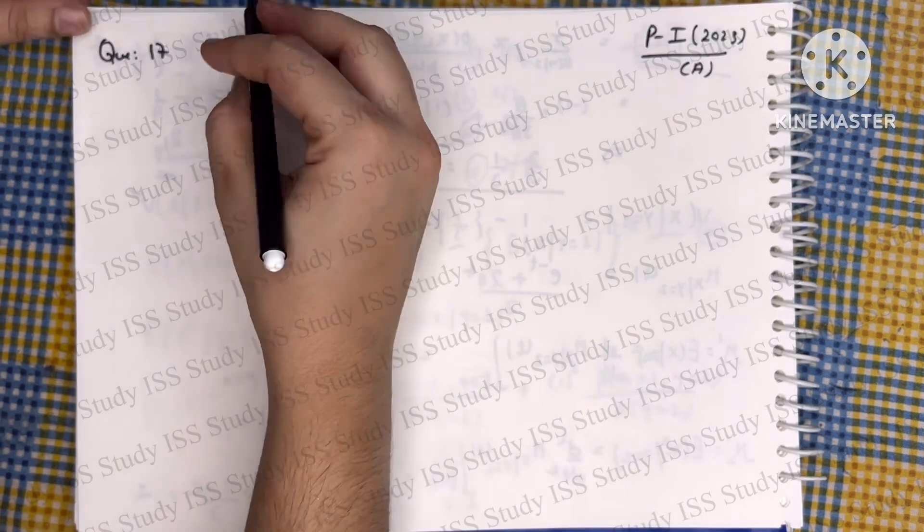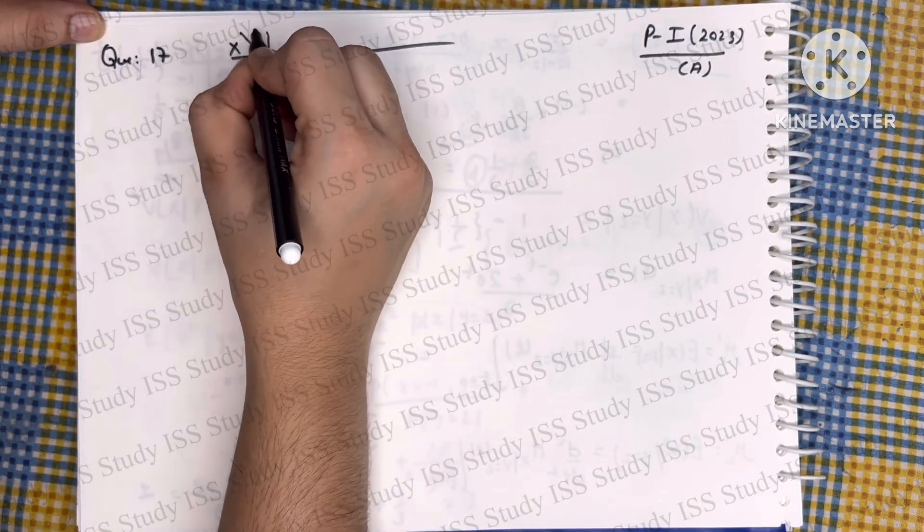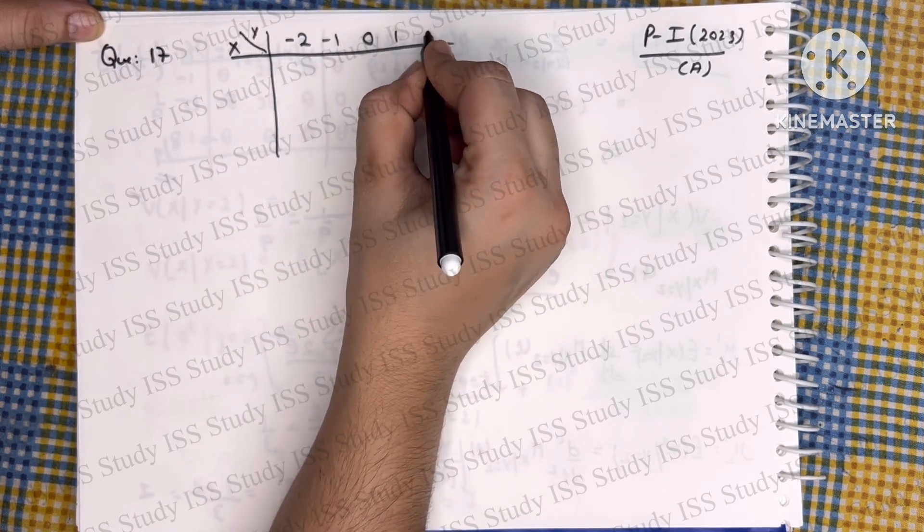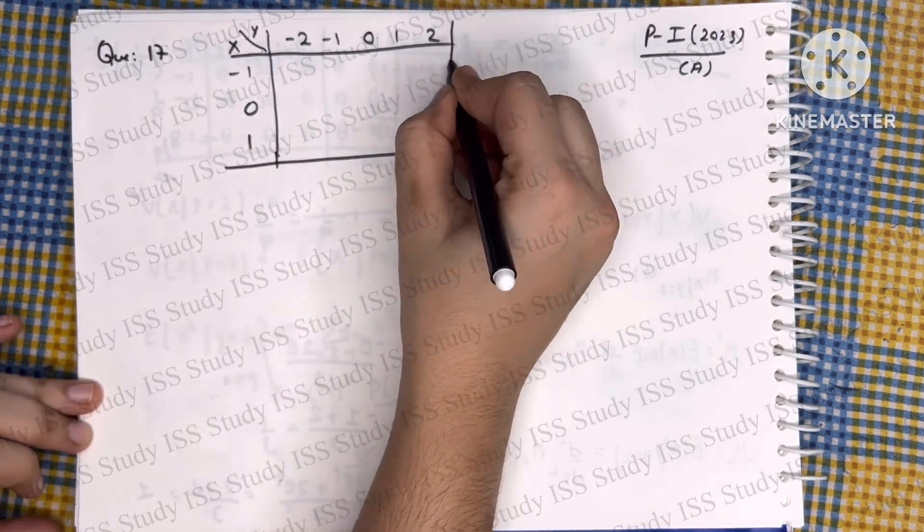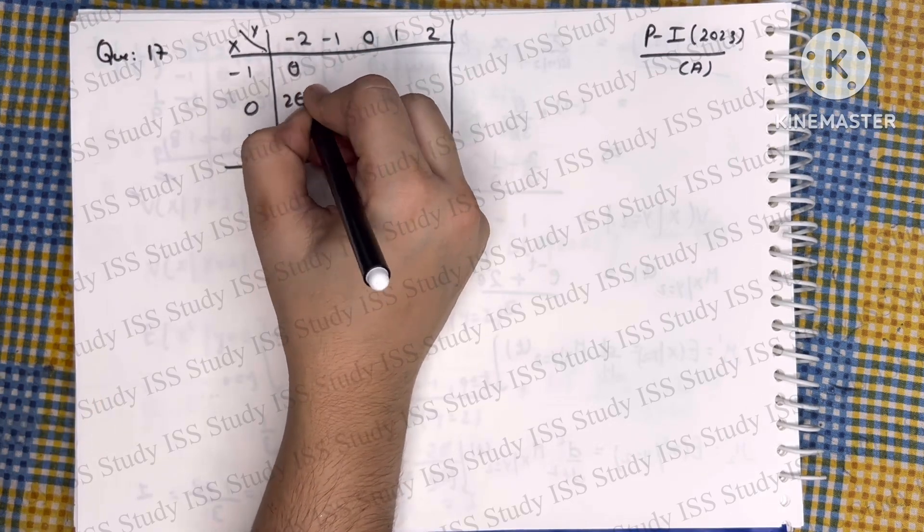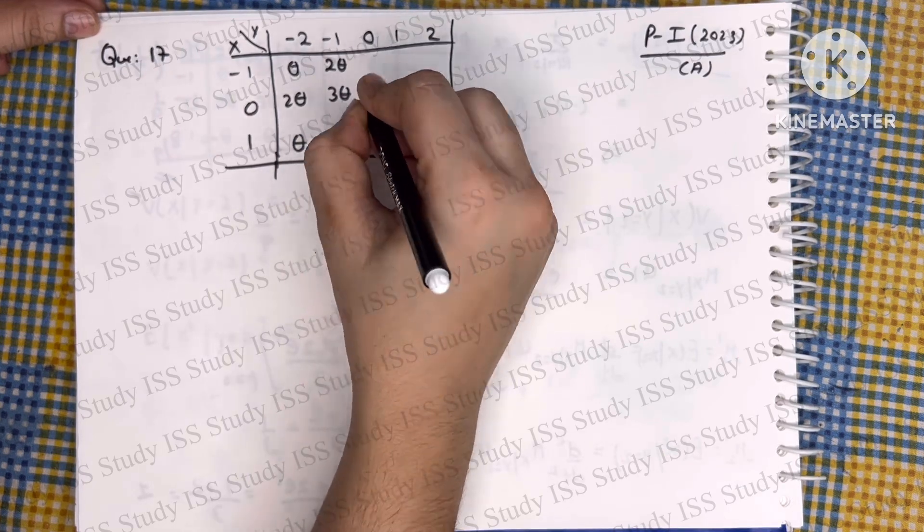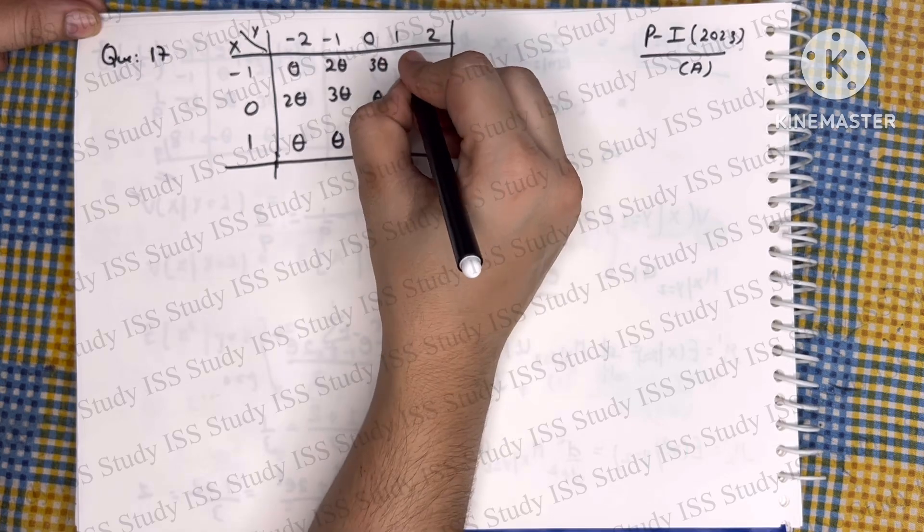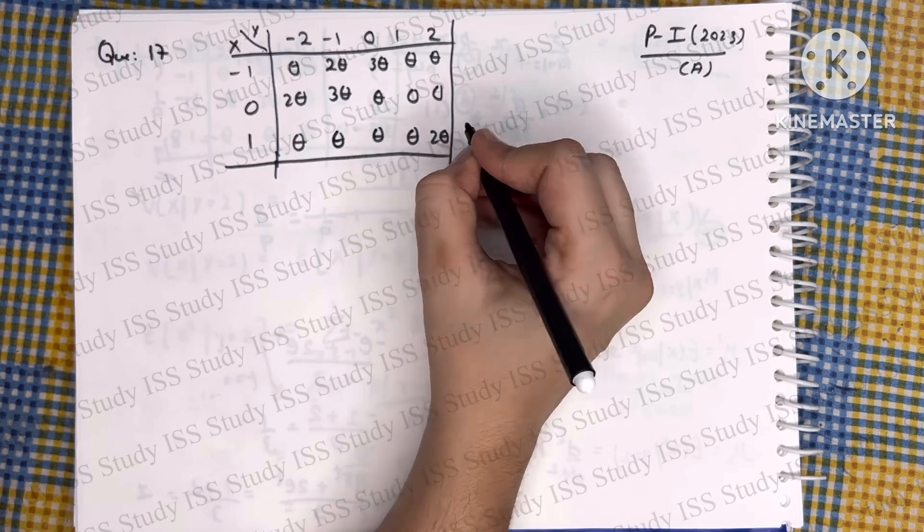Here we have to use the joint PMF of random variables X and Y. X is taking values minus 2, minus 1, 0, 1, and 2. Y is taking values minus 1, 0, and 1, and corresponding values are given in the table: theta, 2 theta, theta; 2 theta, 3 theta, theta; 3 theta, theta, theta; theta, 0, theta; theta, 0, 2 theta.